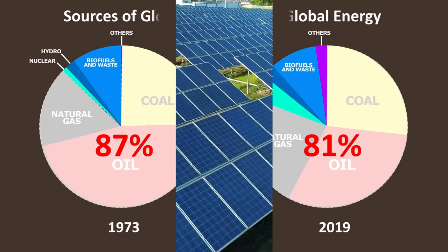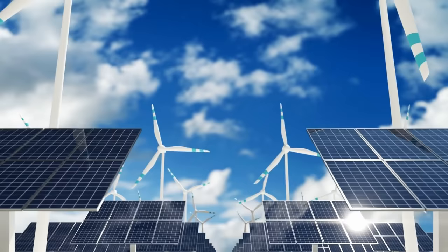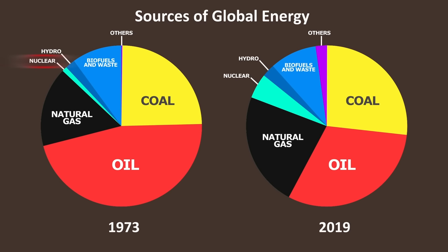You would think that this increase in green energy came from solar or wind power. But no, it has come largely from the adoption of nuclear power. Nuclear power went from 1% of our energy consumption to 5% in the same 1973 to 2019 period.